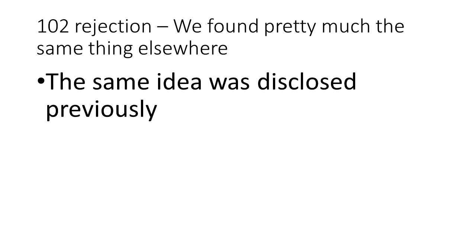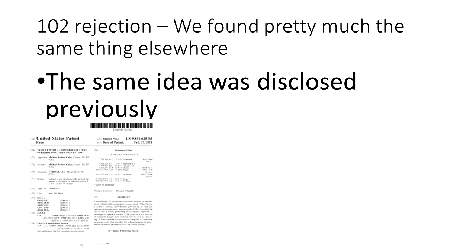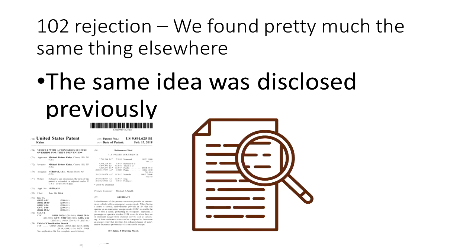A 102 rejection basically means the patent office found pretty much the same thing somewhere else — it may not be photo-identical, but pretty much the same thing. They may have found it in a previously published patent or patent application, in a research paper, magazine, or other publication, or a product for sale somewhere. All of these things — patents, publications, and things for sale — are considered prior art. Prior art is legalese for stuff that existed before my invention.